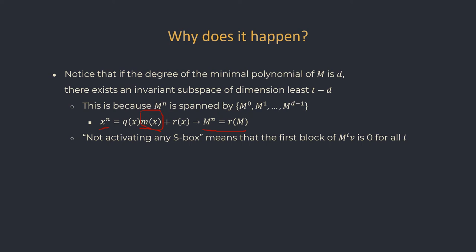The condition for some input difference v to not activate any S-box is that the first block of v is 0 — so that the first S-box is not activated — then the first block of M times v also has to be 0, so that the second S-box is not activated, and so on. For every round i, we get a linear constraint on M^i times v. Since the powers of M span a space of dimension at most d, these are only d linear constraints, and thus the dimension of the solution space must be at least T minus d.